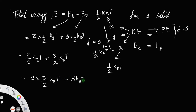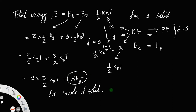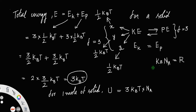Now, for one mole of solid, in order to get the total energy, you have to multiply this by Avogadro's number. The total energy is then the internal energy associated with the solid. So it becomes 3 kb T into Na. Since kb times Na equals the universal gas constant R, this simplifies to 3RT.